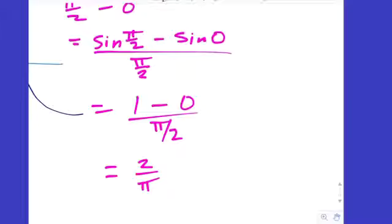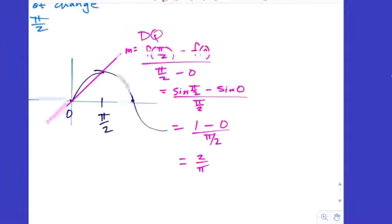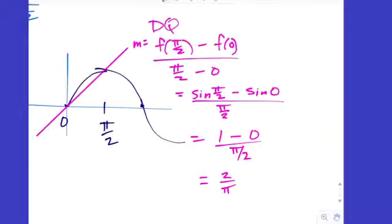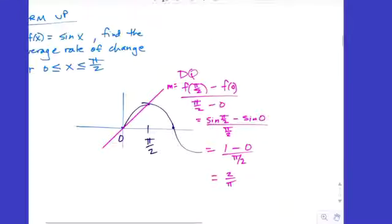I threw 2 over pi out there as a possible answer early and no one said anything — maybe you're just too shy. That's the average rate of change. So on average, the function goes up 2 over pi, or 2 pi's over 1. But that's not how it actually got there.